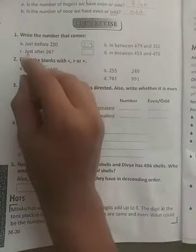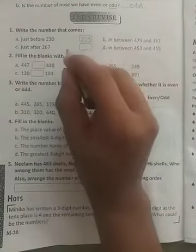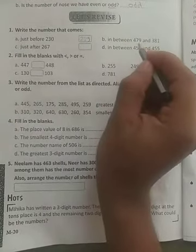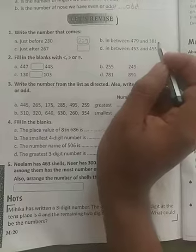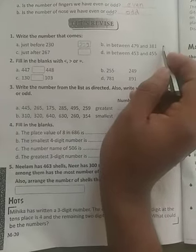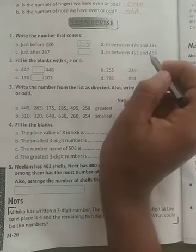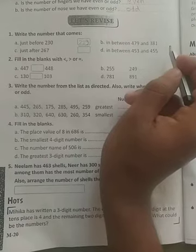So like that, read these all questions and complete it. Now here, in between 479 and 381, which number comes? That we have to write over here. In between 453 and 455, which number comes? That you have to write over here.